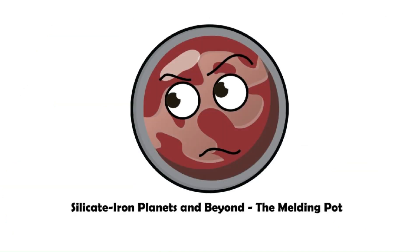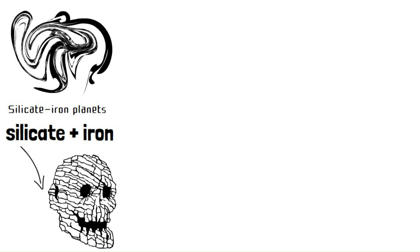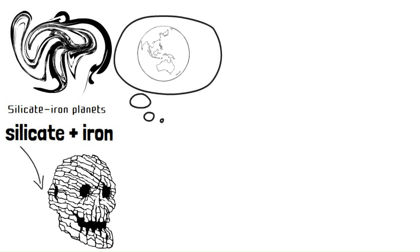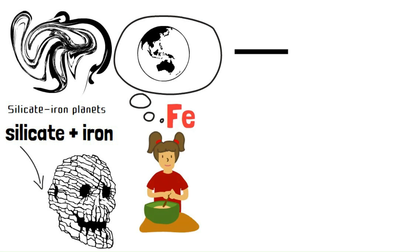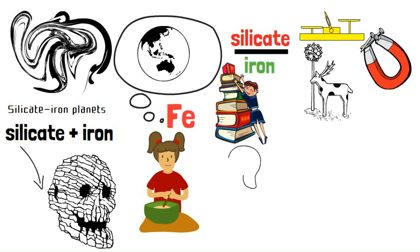Silicate iron planets and beyond. The melding pot. Many planets are a blend of different materials. Silicate iron planets are a prime example, combining silicate minerals with iron, forming the core composition of many rocky planets. Imagine Earth, but with a slightly different recipe, a bit more iron in the mix. The ratio of silicate materials to iron in a planet can influence its overall density, magnetic field strength, and potential for harboring life. Studying silicate iron planets can help us understand the internal structure and composition of different types of planets, providing valuable insights into planetary formation and evolution.